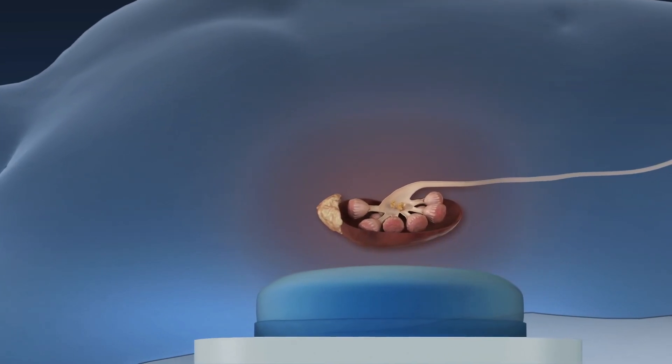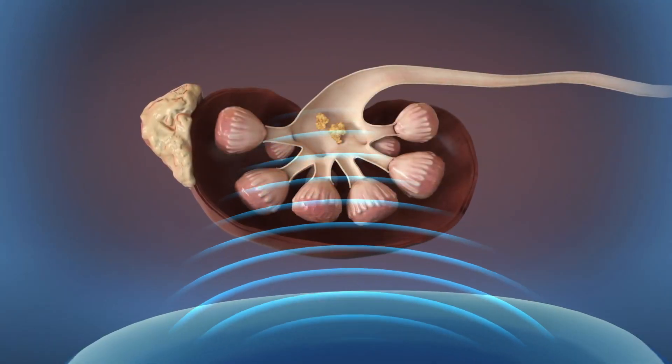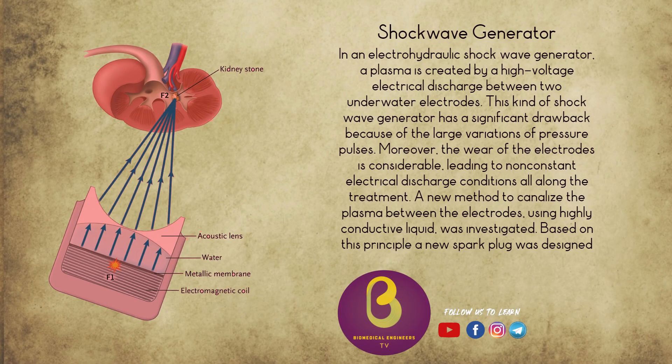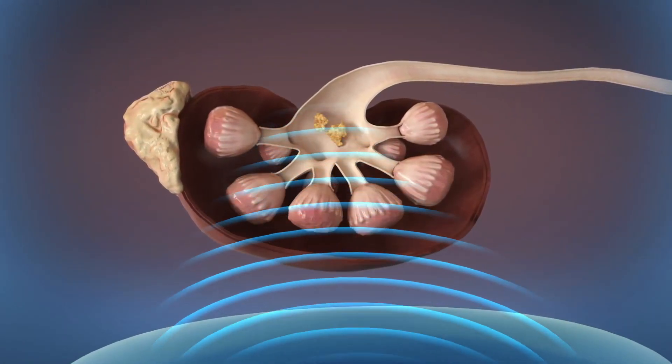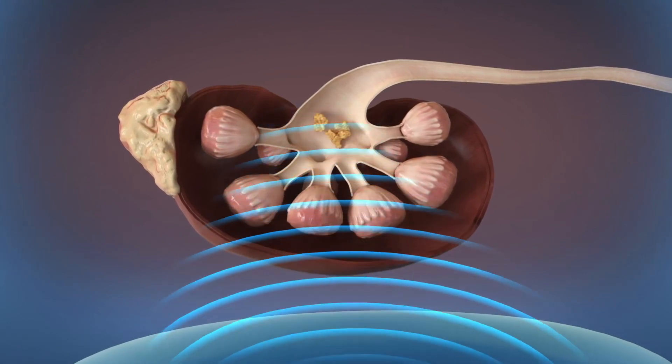The first method is electrohydraulic. The original method of shockwave generation used in the Dornier HM3 was electrohydraulic, meaning the shockwave is produced by spark gap technology. In an electrohydraulic generator, a high voltage electrical current passes through a spark gap electrode located within a water-filled container.